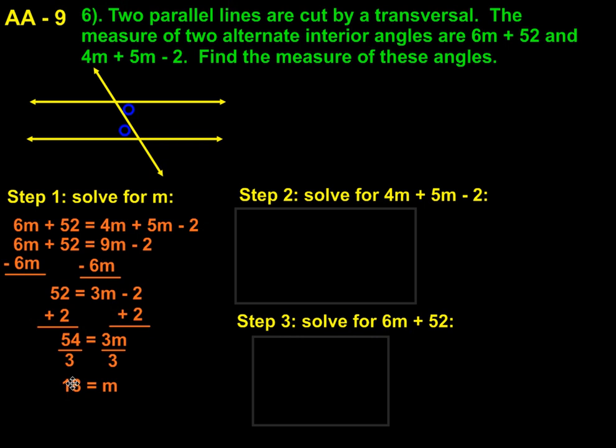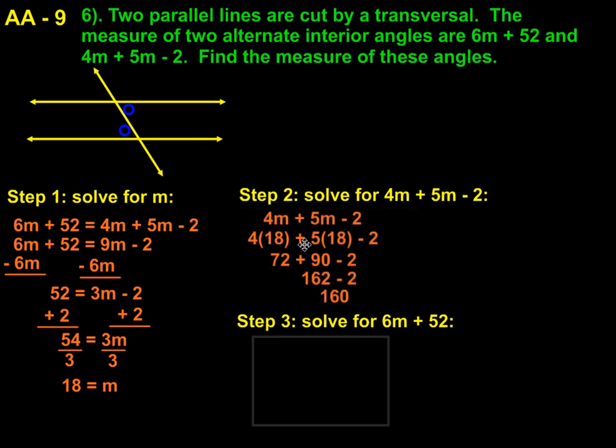We then substitute 18 into both of the equations for m. So with 4m plus 5m minus 2, we get 4 times 18 plus 5 times 18 minus 2. So we get 72 plus 90 minus 2. 72 plus 90 gives us 162 minus 2 gets 160. So one of the angles is 160 degrees.